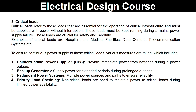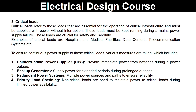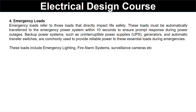Measures for critical loads include: uninterrupted power supplies, which provide immediate power from battery during a power outage; backup generators, which supply power for extended periods during prolonged outages; redundant power systems with multiple power sources and paths to ensure reliability; and prioritized load shedding, where non-critical loads are shed to maintain power to the critical loads during limited power availability.